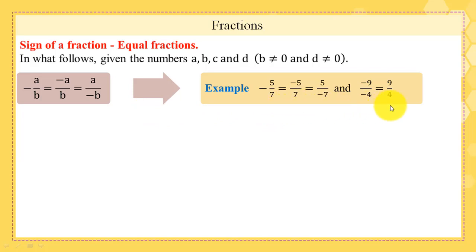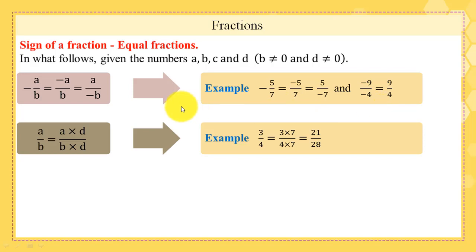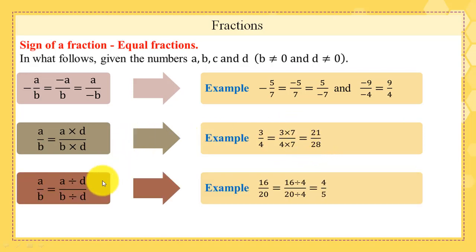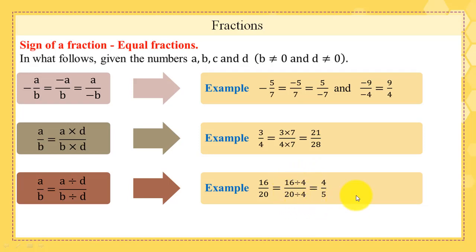Second property: a/b = (a×d)/(b×d). We can multiply both sides of a fraction by the same number. For example, 3/4 multiplied by 7 gives 21/28. Third property: a/b = (a÷d)/(b÷d). We can also divide both sides of a fraction by the same number. Example: 16/20 = (16÷4)/(20÷4) = 4/5.